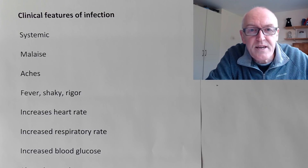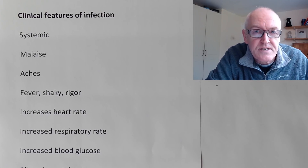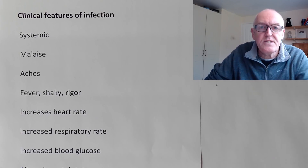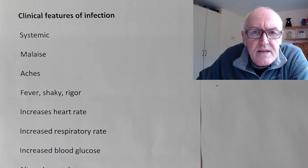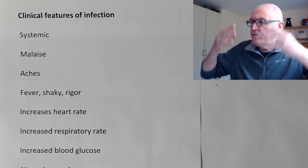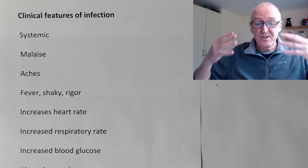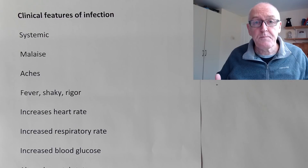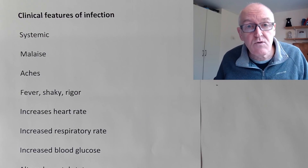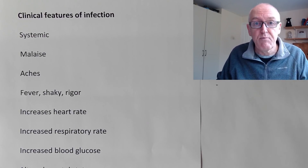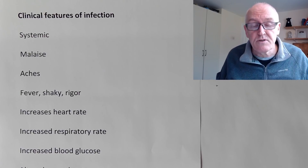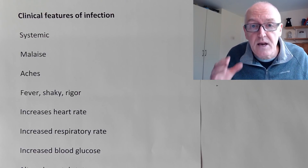Welcome everyone. Today we're looking at infections and I want to think about systemic infections. A systemic infection means that you don't feel well because it's affecting all of the body, all of the systems of the body - it's systemic. The converse of that is a localized infection, so like if you have a red spot, a boil, or a red eye - that would be a local infection.